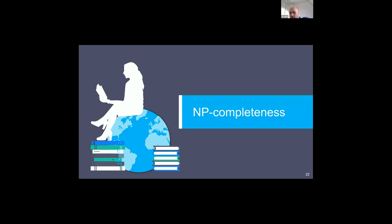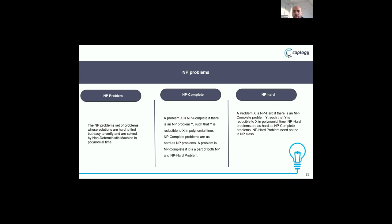The objective of our paper is to determine whether the K-crane scheduling problem is NP-complete. For NP-complete: an NP problem is a set of problems whose solutions are hard to find but easy to verify, solved by a non-deterministic machine in polynomial time. We say that a problem X is NP-complete if there is an NP problem Y such that Y is reducible to X in polynomial time. NP-hard is when there is an NP-complete problem Y such that Y is reducible to X in polynomial time.